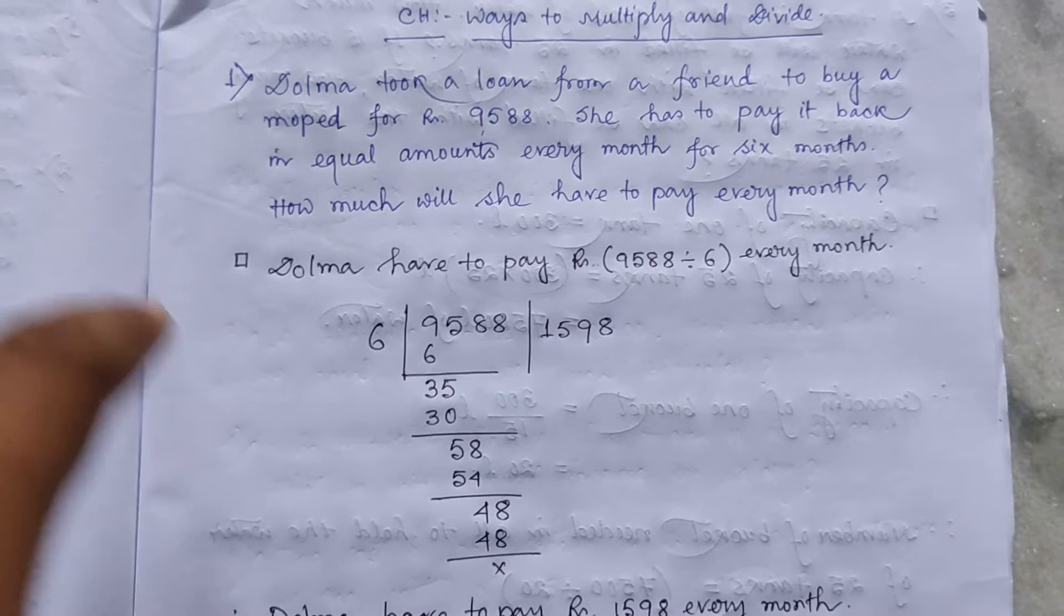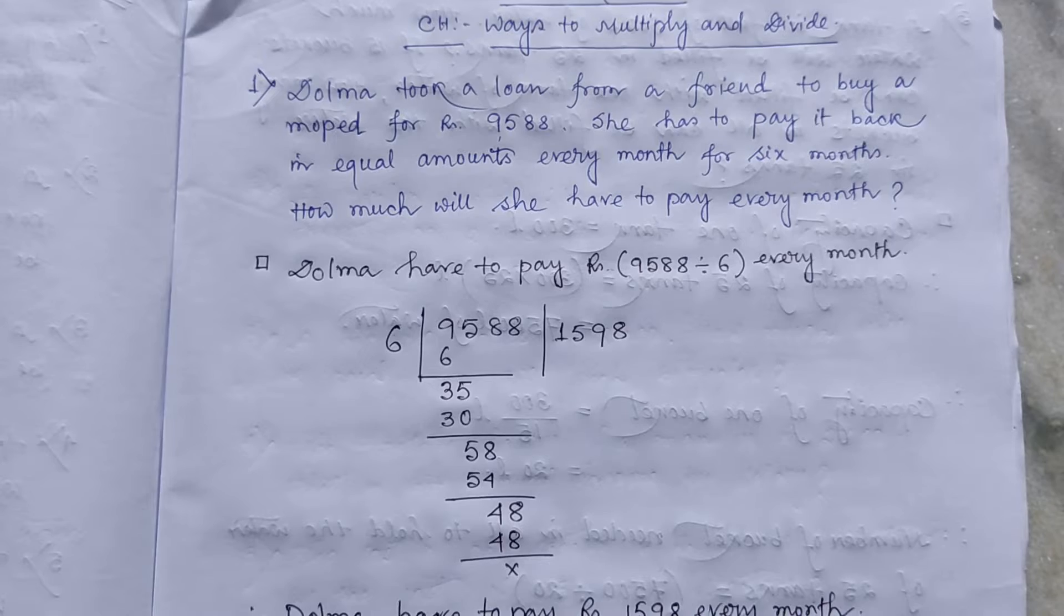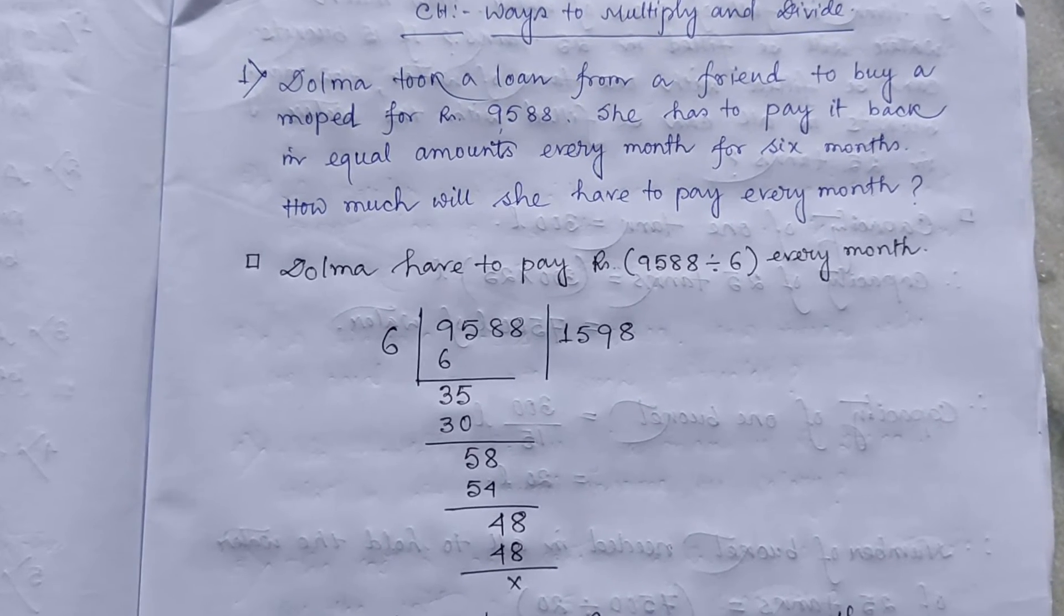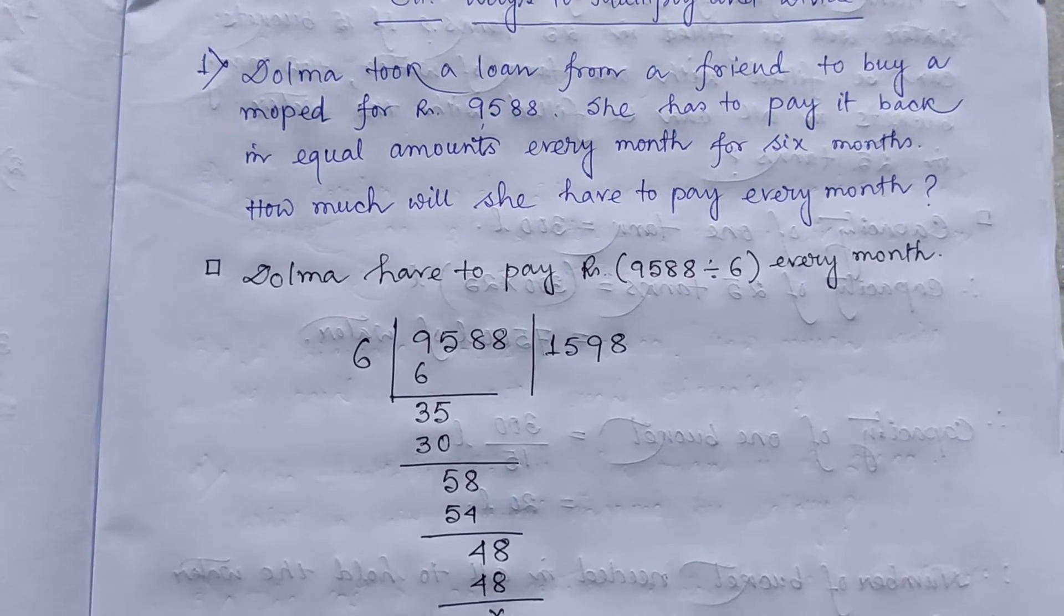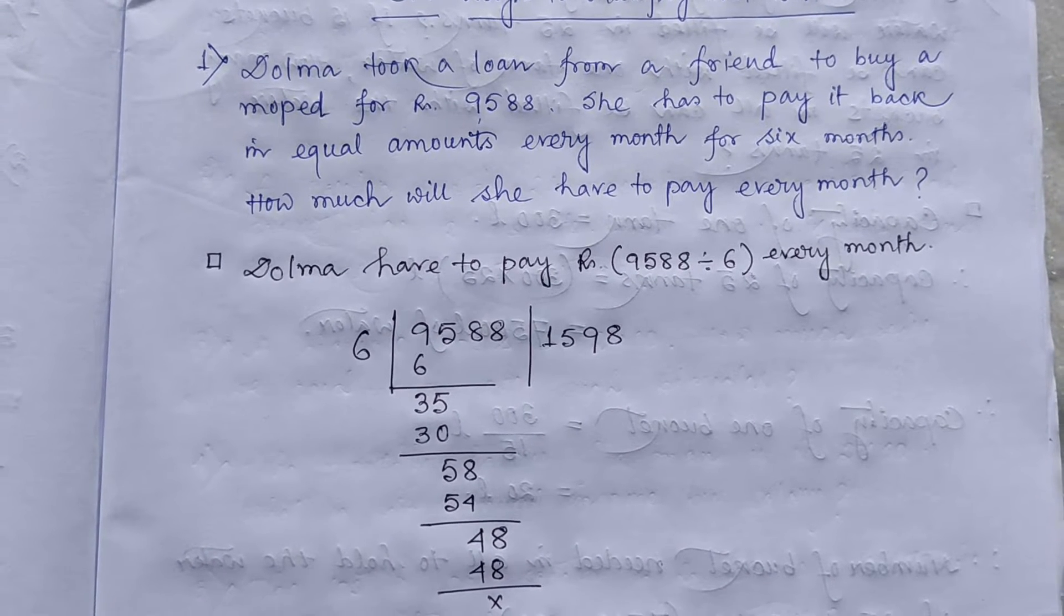Number 1. Dalma took a loan from a friend to buy a moped for rupees 9,588. She has to pay it back in equal amounts every month for 6 months.